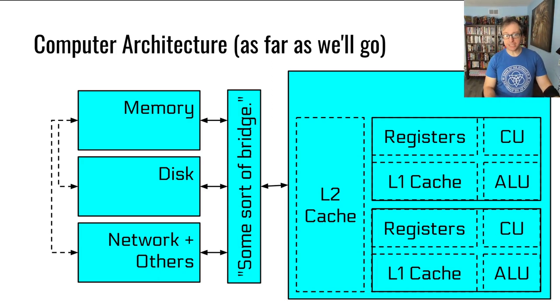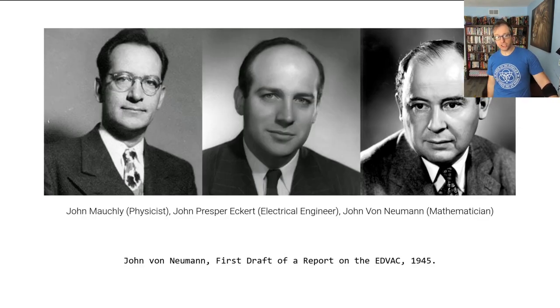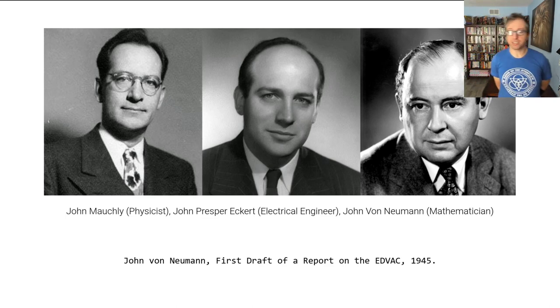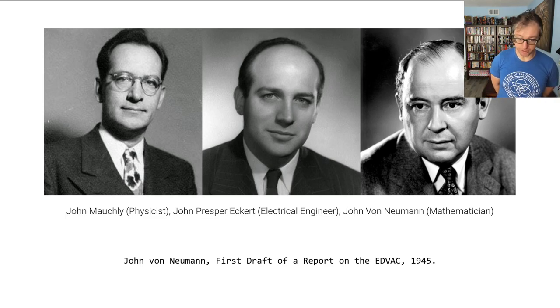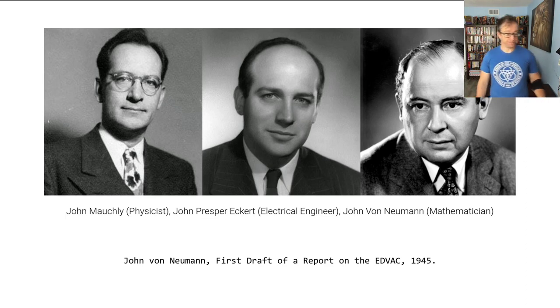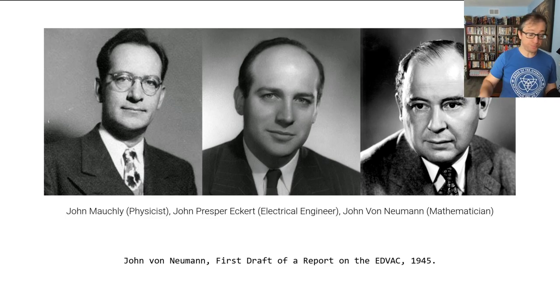Where did we get this computer architecture? We got it from these three Johns—a physicist, an electrical engineer, and a mathematician—who created what ended up being called, due to a misadventure with a draft, the Von Neumann architecture. It was a draft of a paper that John Mauchly and John Eckert were writing.